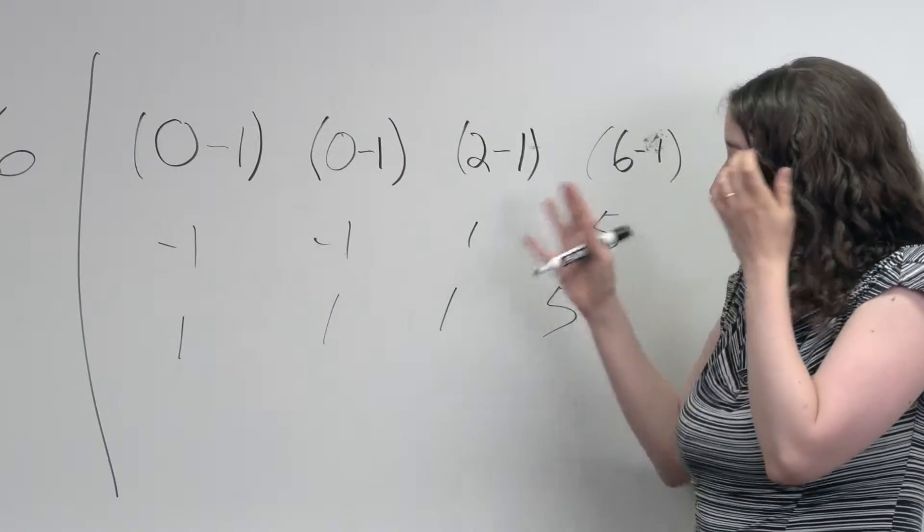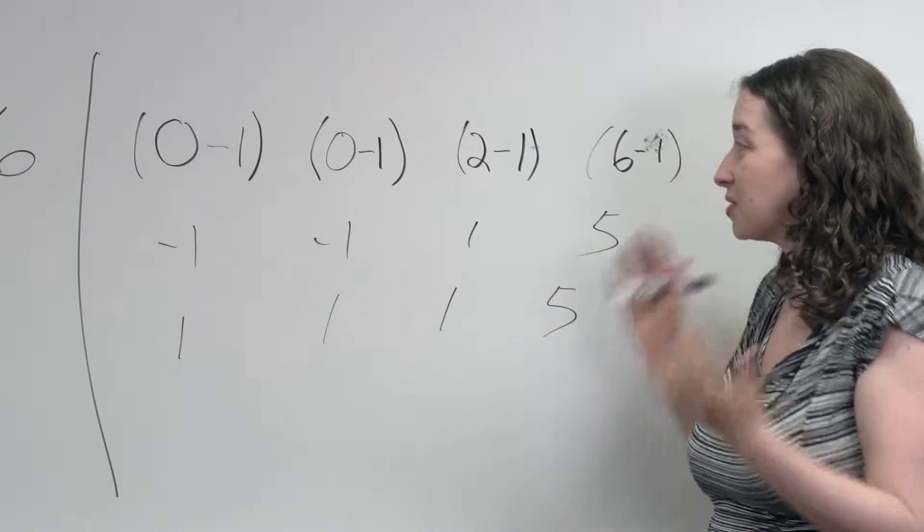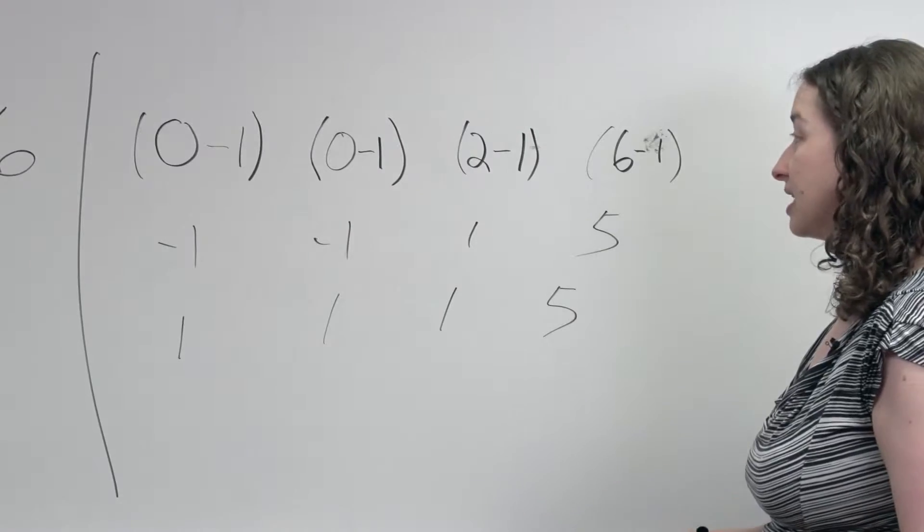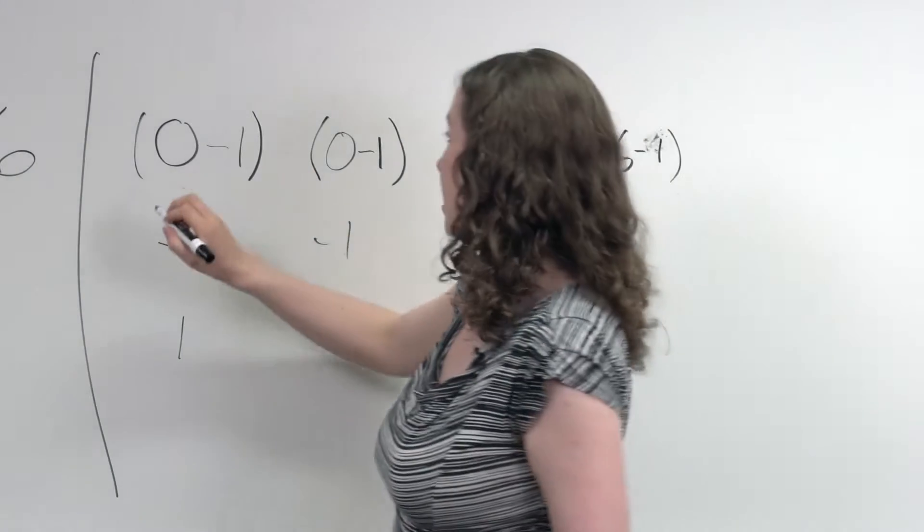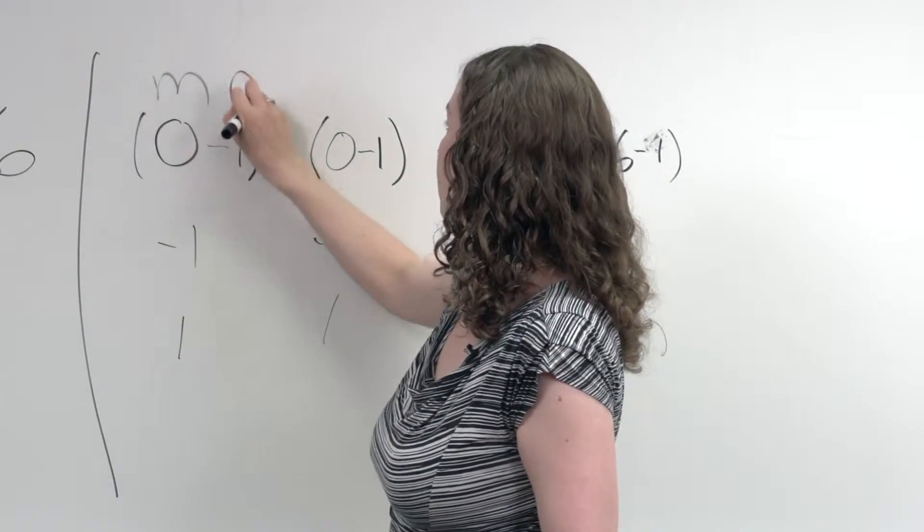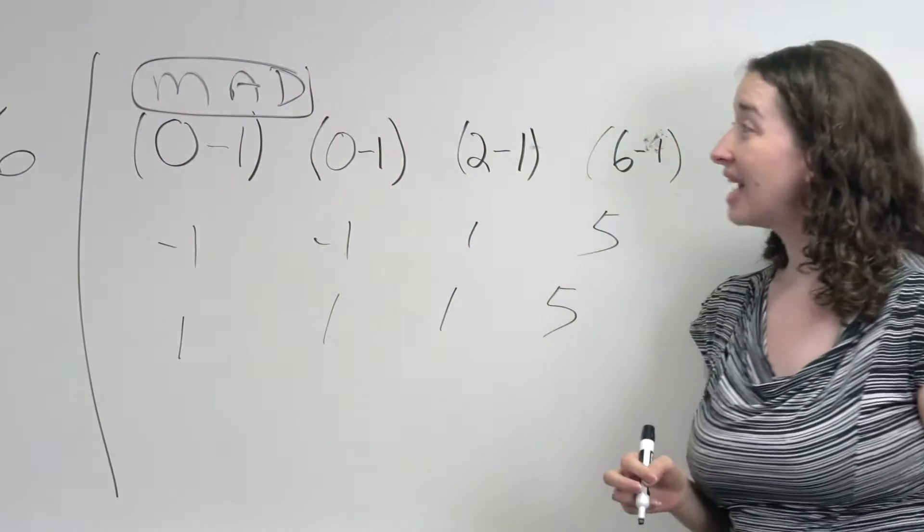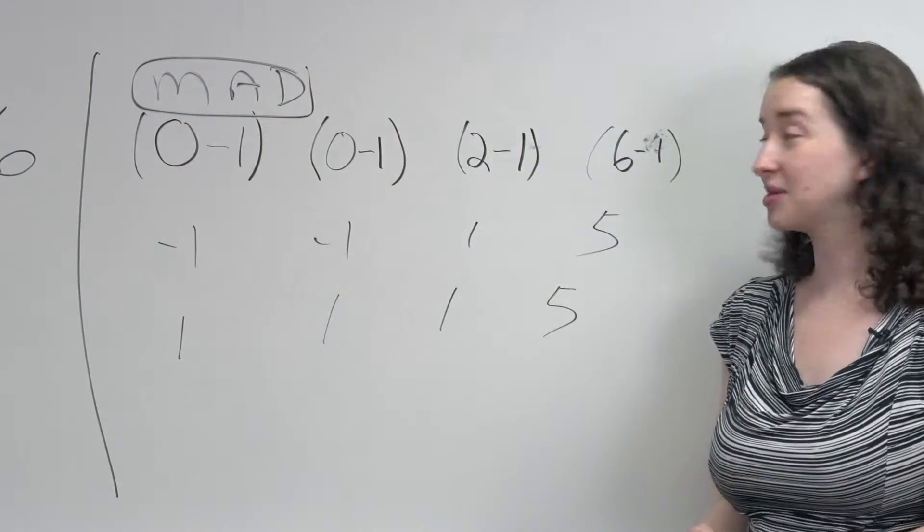So it seems like I'm just kind of making this up, I'm taking absolute values, but there is a set of ways to measure dispersion that are based on this technique. And it's abbreviated MAD, but that can mean multiple things. It could mean mean absolute deviation or median absolute deviation.